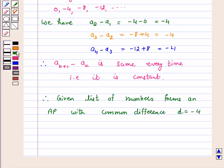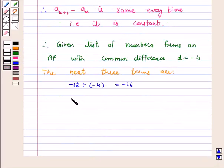Now, the next three terms are: -12 + (-4), which is equal to -16. And -16 + (-4) is -20. And -20 + (-4) is equal to -24.